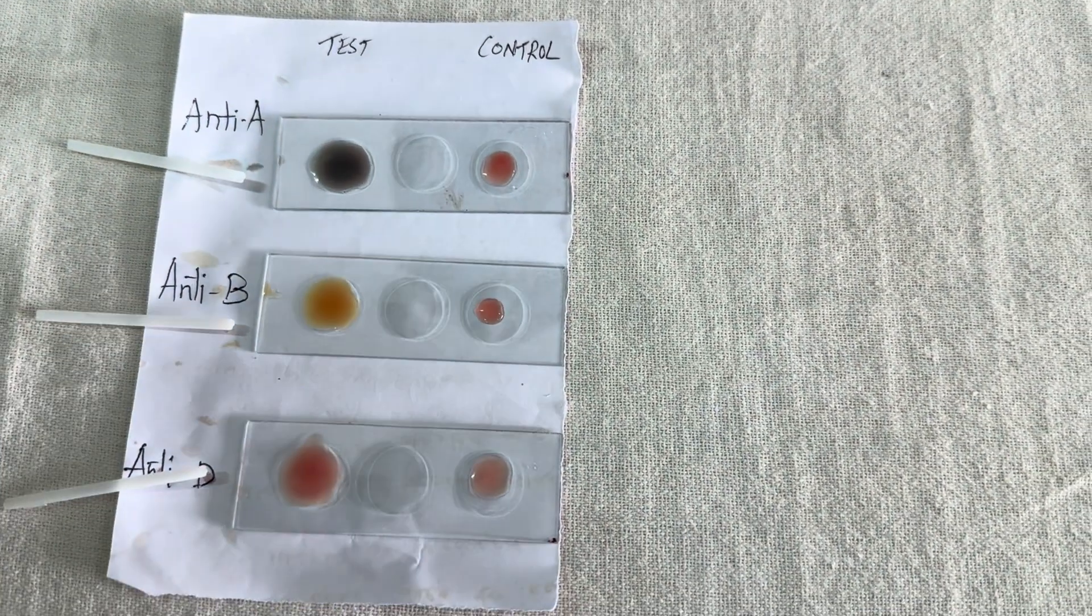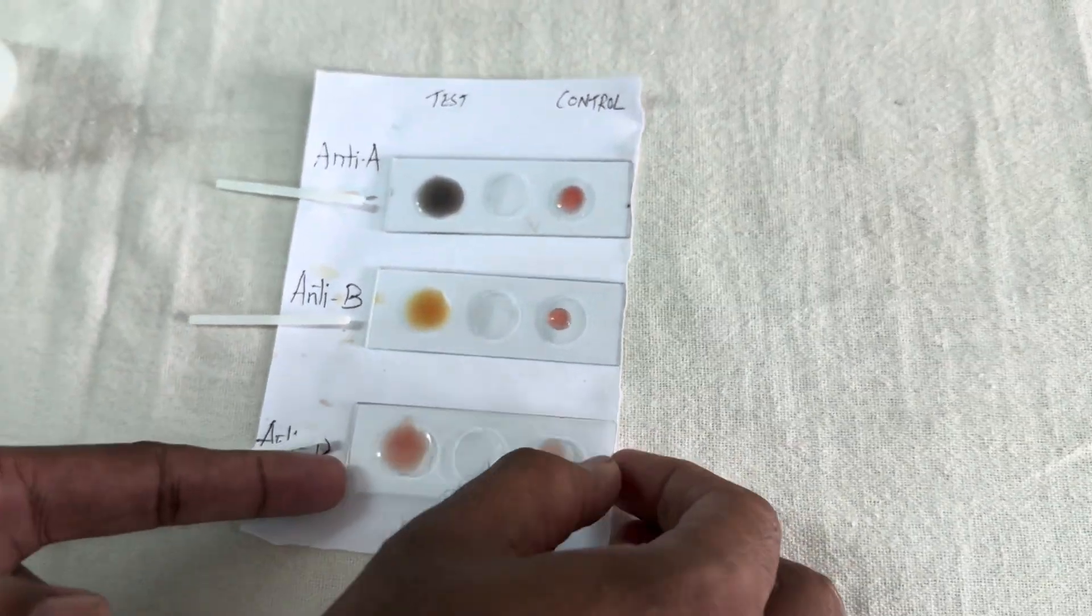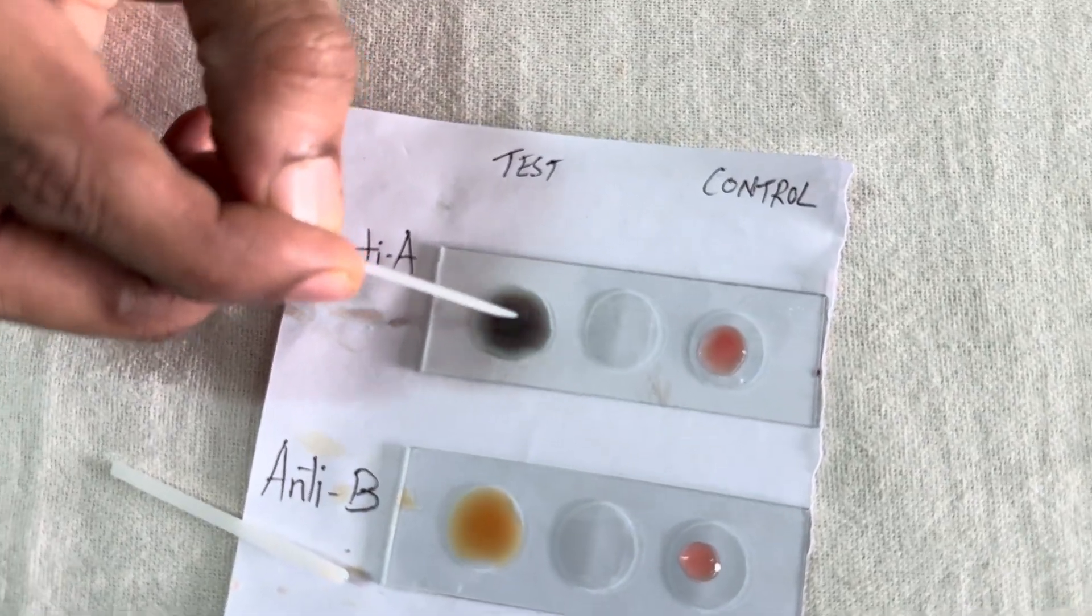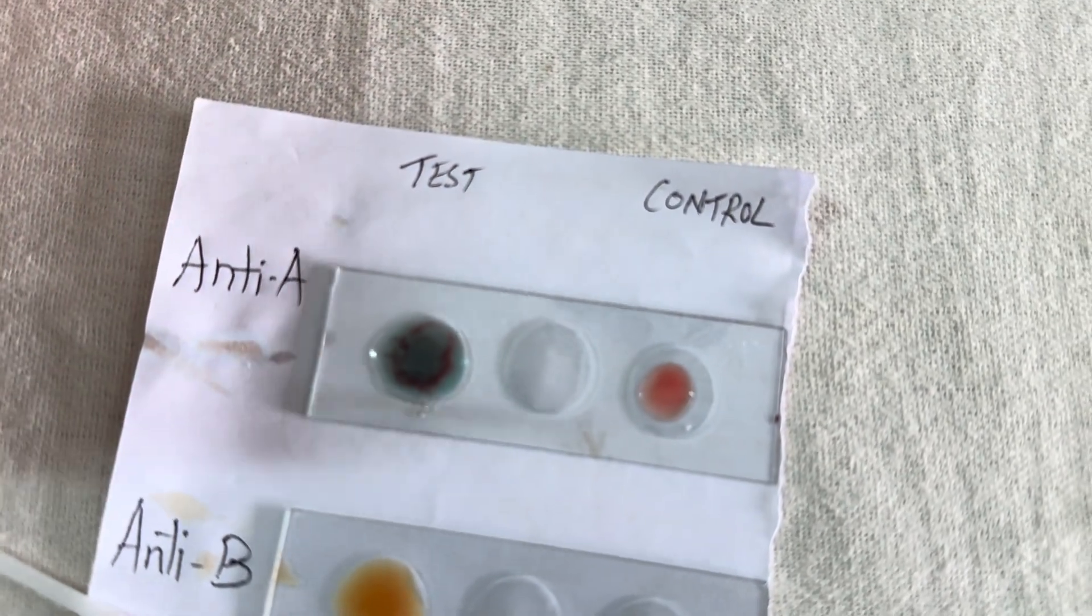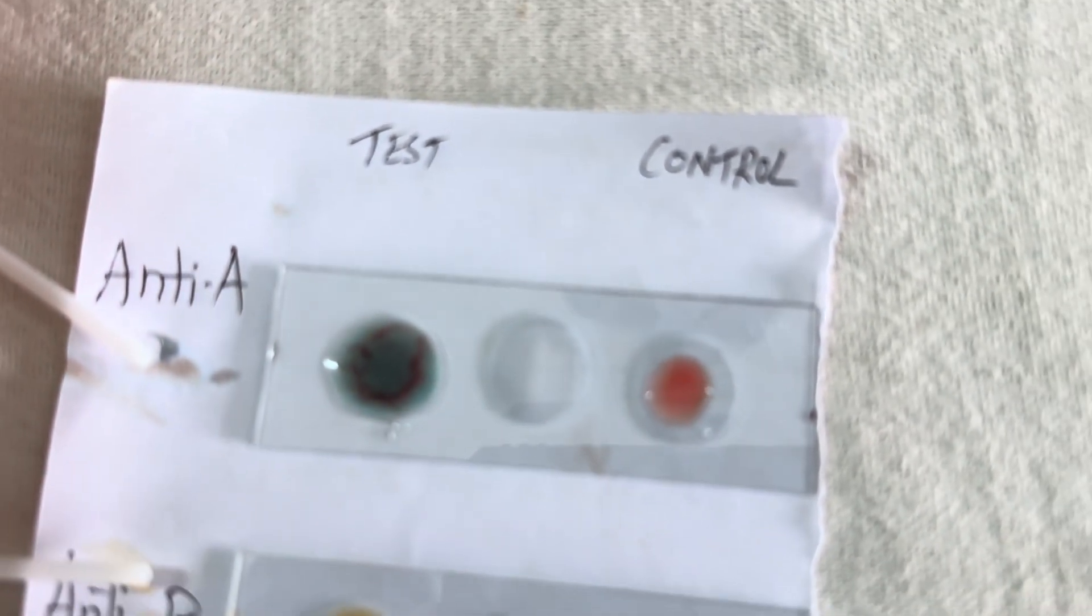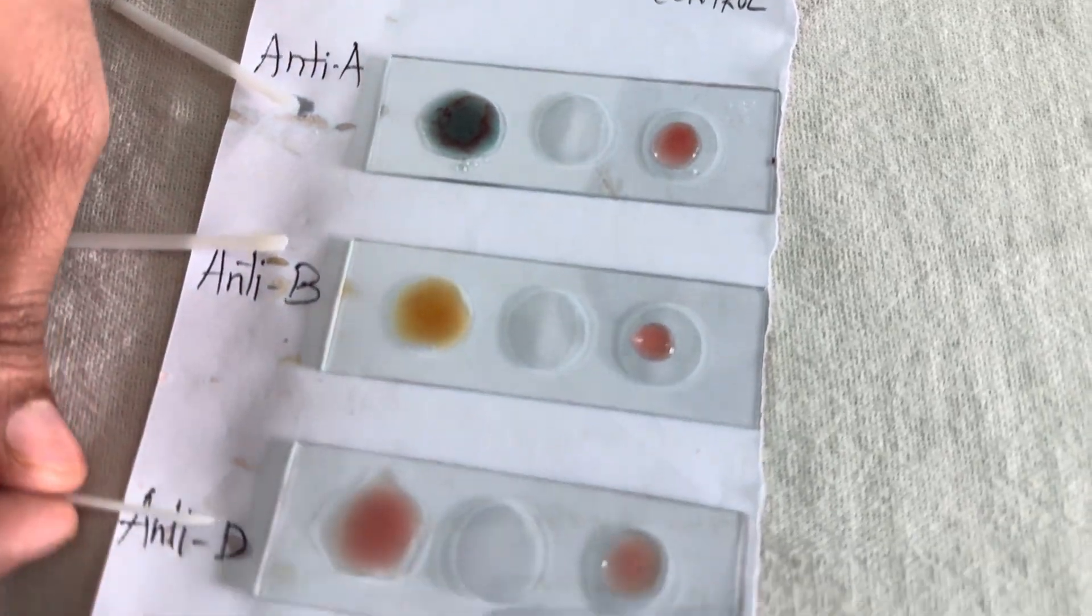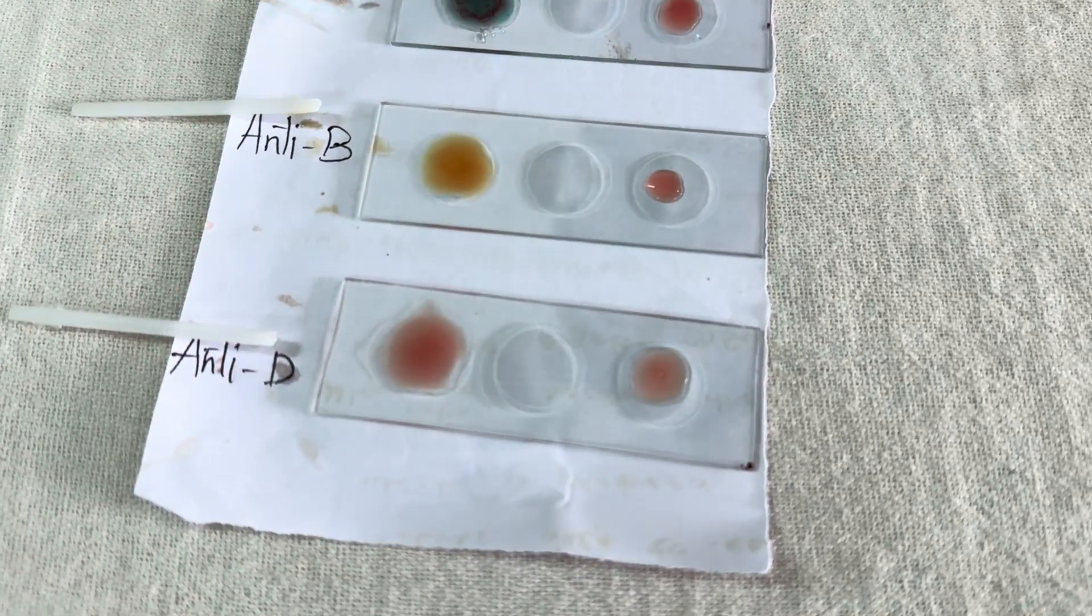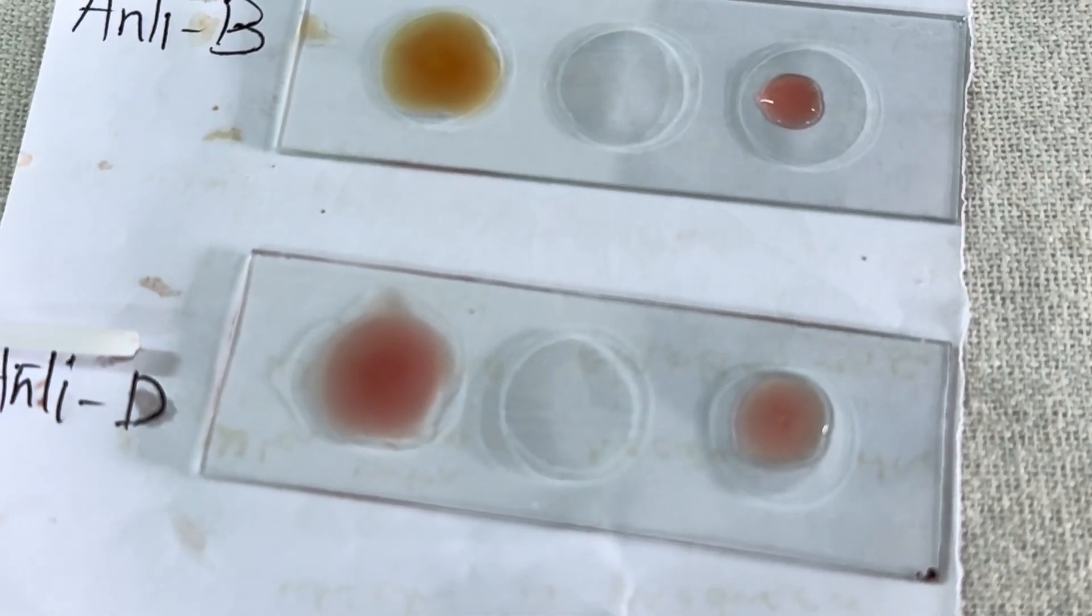Now I am able to see some agglutination reaction in the anti-A as well as in the anti-D. In anti-A you can see clumping. Red blood cell clumpings are seen in anti-A. There is no clumping seen in anti-B. And finally you can see clumping in anti-D. That means my blood group is A positive. That is clumping in the anti-A and agglutination reaction in the anti-D.